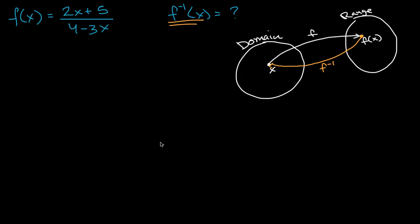Now how do we actually figure out the inverse of a function, especially a function that's defined with a rational expression like this? Well the way that I think about it is, let's say that y is equal to our function of x. So we could say that y is equal to two x plus five over four minus three x.